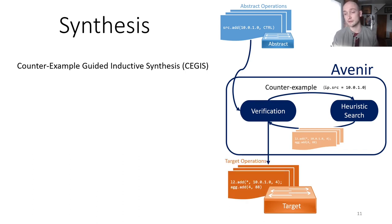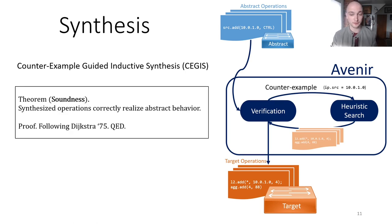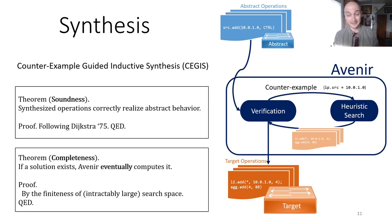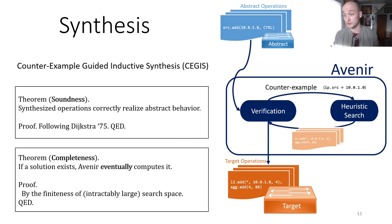We proved two correctness theorems about this algorithm. First, we prove soundness, which says that if we compute a solution, it correctly realizes the abstract behavior, following classic results by Dijkstra in 1975. We also prove completeness, which says that if a solution exists, Avenir will eventually compute it. The proof here follows by the finiteness of the search space of all controller operations, which is really far too large of a space to exhaustively explore. So we need to come up with good heuristics and optimizations to make Avenir scale in the common case.